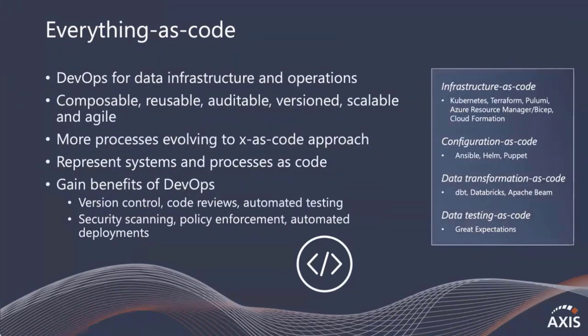Next up is 'everything is code.' What we're trying to get at here is integrating DevOps into our data infrastructure and data operations. More and more, we're seeing things evolving towards an as-code approach — whether that be infrastructure, configuration, data transformation, or data testing. The important piece isn't just having more code; we want to treat our systems and processes as code to gain the benefits we receive from DevOps and software development elsewhere in the org — things like version control, automated testing and deployment, security scanning, and policy enforcement. This is very mature in other parts of our organization, and we want to bring that to our data ecosystem.